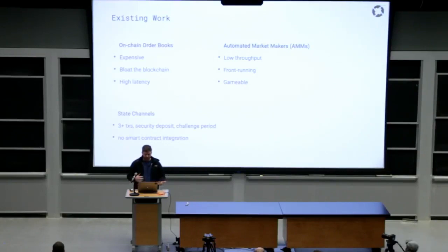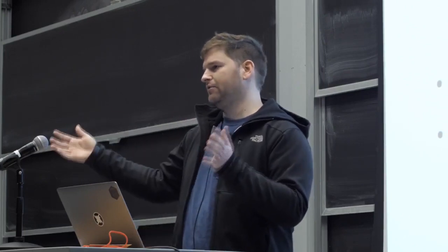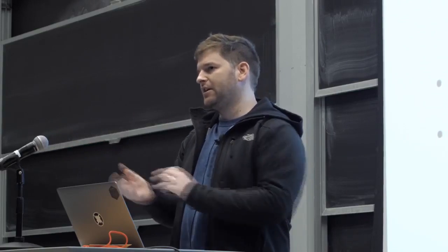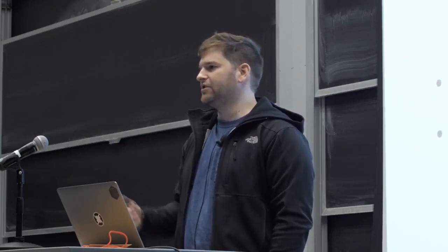One of the last approaches to decentralized exchange that people were experimenting with early on is using this technology called state channels, very similar to payment channels for those that are more comfortable with Bitcoin terminology. And the way that state channels work is that you move some assets into this smart contract that is locked up. You do a variety of different transactions off of the blockchain. You can sort of sequence these transactions, aggregate them into a final state change, and then you dump that final state into the blockchain and settle the state channel or close the state channel in a single transaction.